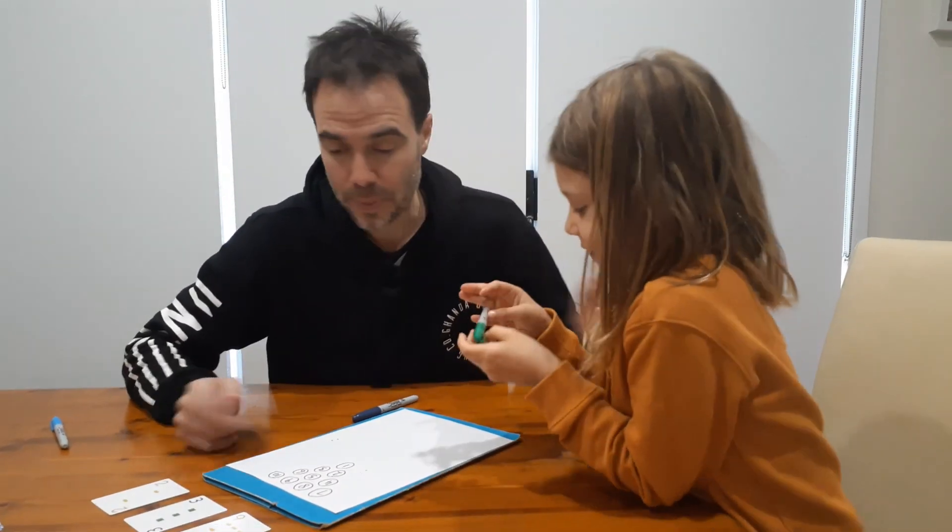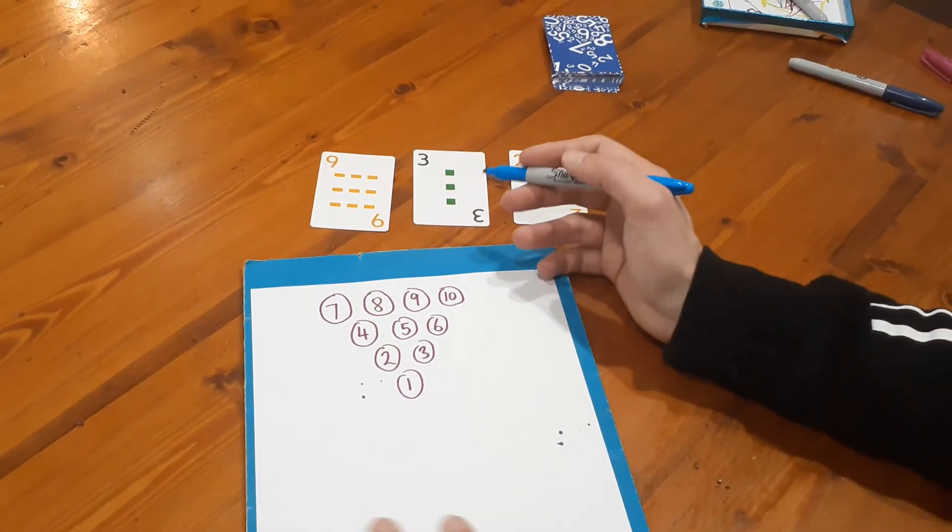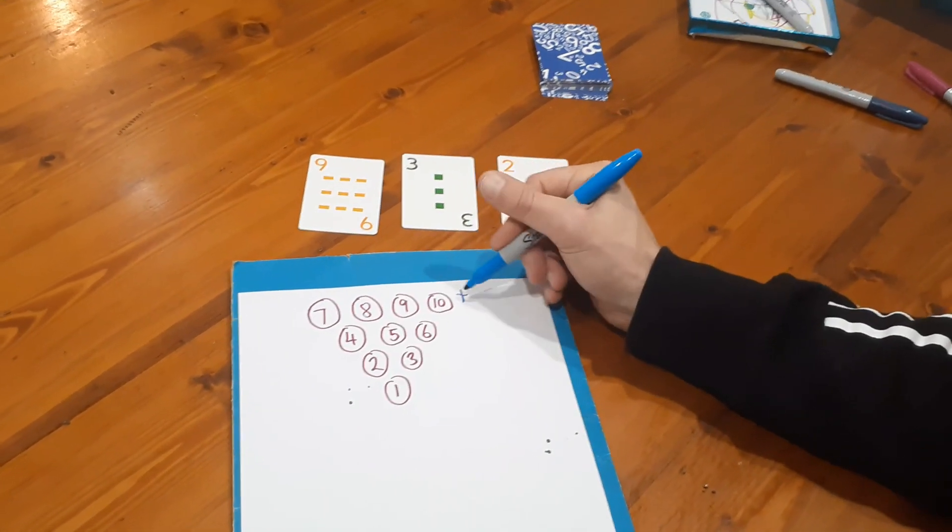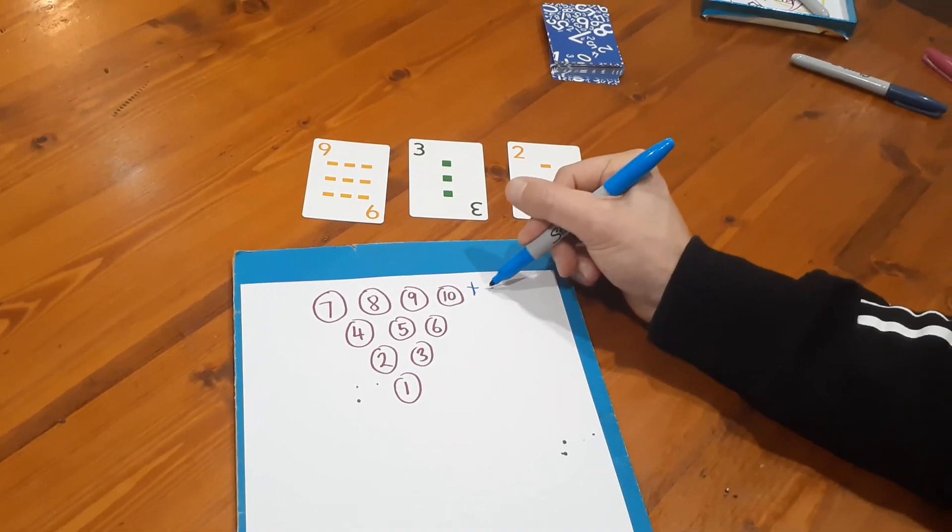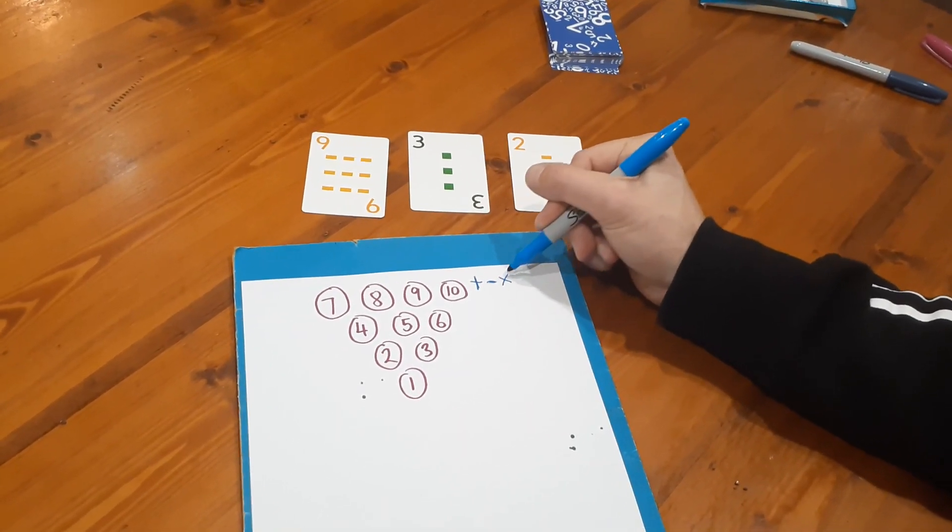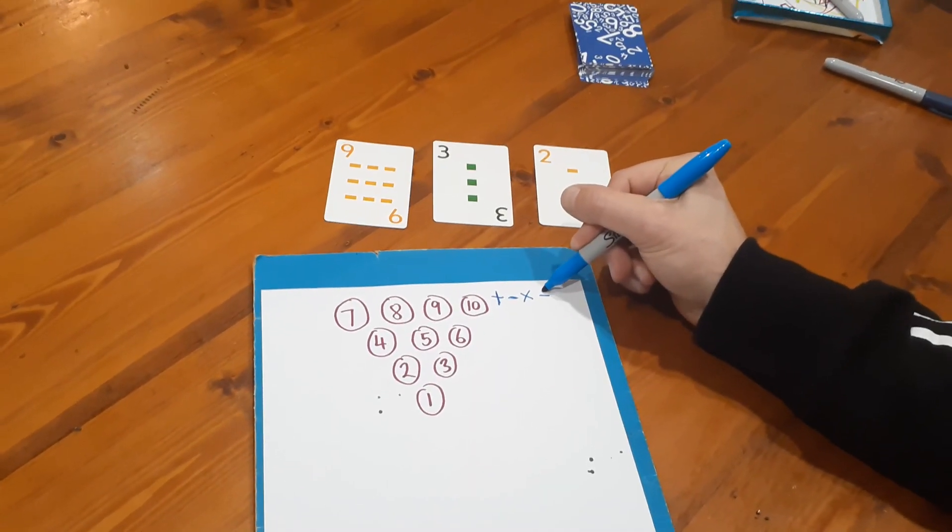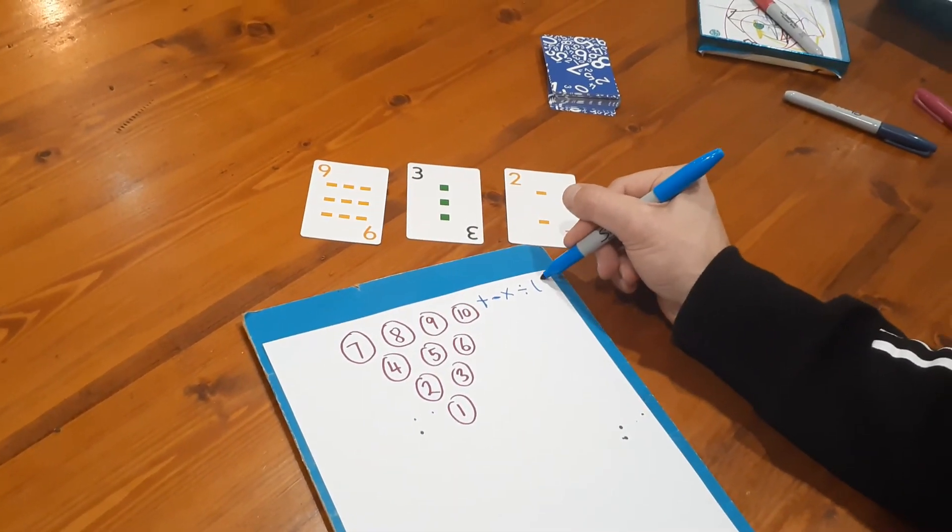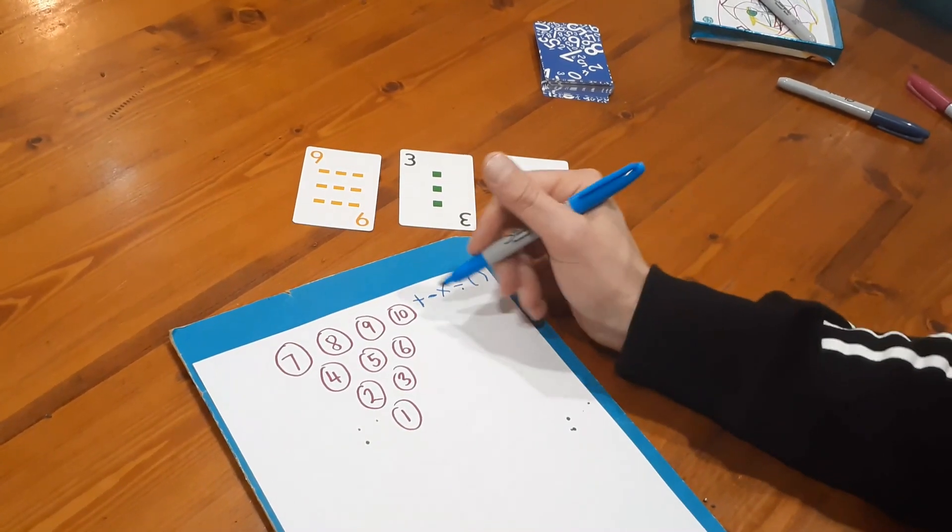To make our equations we can use the four operations: addition, subtraction, multiplication, and division. You can also use brackets if they'll help you.